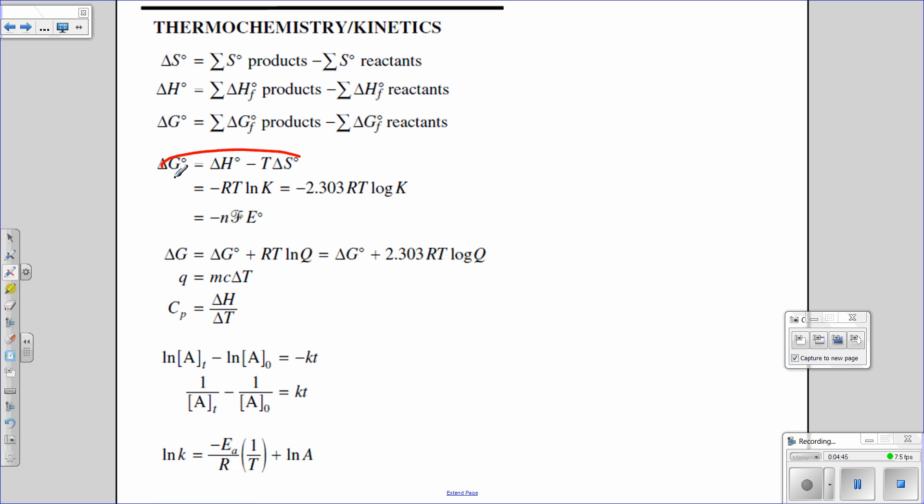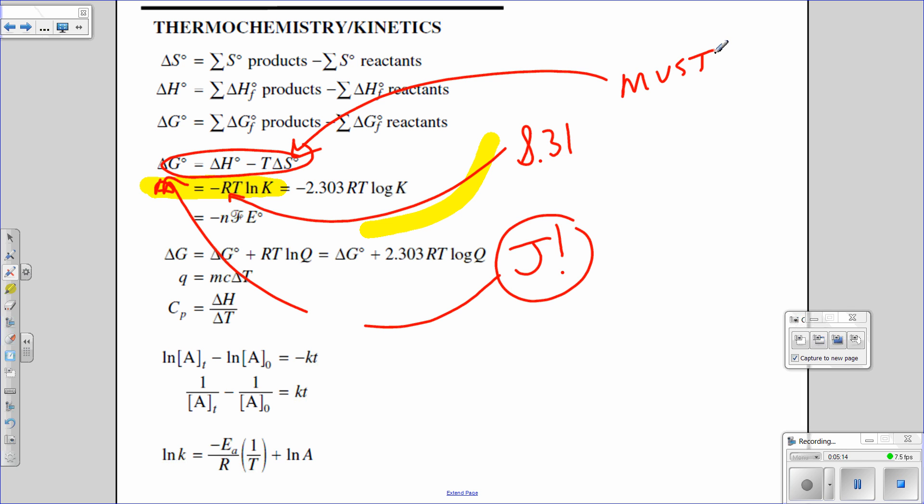Thermodynamics. Notice delta G equals delta H minus T delta S is there. Delta G for equilibrium is this one. This is the equation I would want you to use. Remember, and I would write in your booklet, as soon as you get your booklet, that the R there is 8.31. And that delta G has to be in joules to solve for it. So I'd make those notations really quick in your notebook, as well as making a notation for delta S must be in kilojoules to be plugged in when you go to solve for it. So on that page, this is the second page of your notebook.